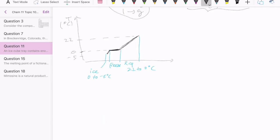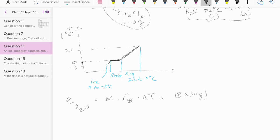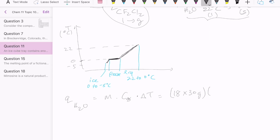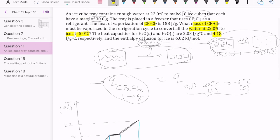So let's see how much energy each of those processes would release. To calculate the amount of energy released when the water cools down from 22 to zero degrees, we can use our MC delta T equation, where the M in this case is 18 cubes of ice, with each cube weighing 30 grams. So that's our mass.